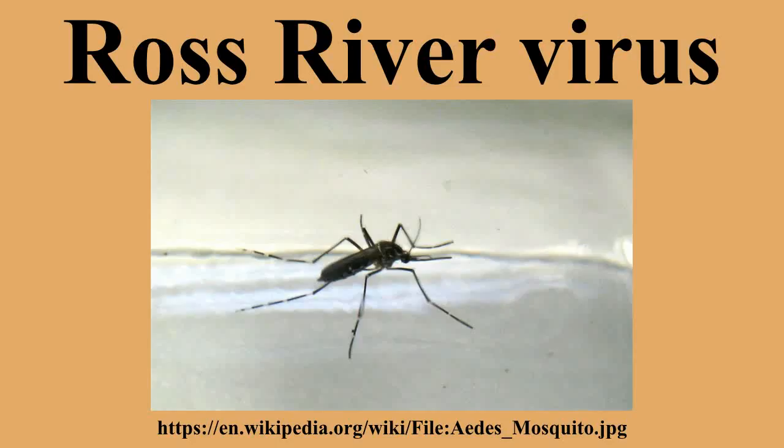Ross River fever is also known as Ross River virus infection or Ross River virus disease. The Ross River virus is named after the Ross River in Townsville, which is the place where it was first identified. Ross River fever is the most common mosquito-borne disease in Australia, and nearly 5,000 people are reported to be infected with the virus each year.